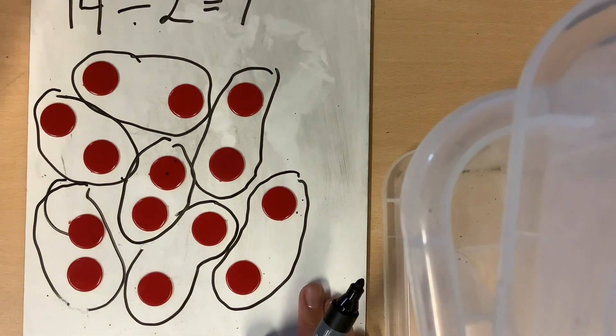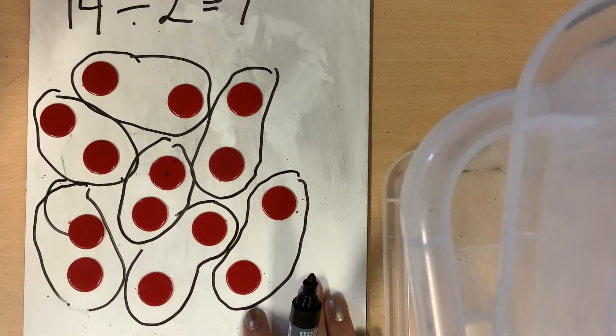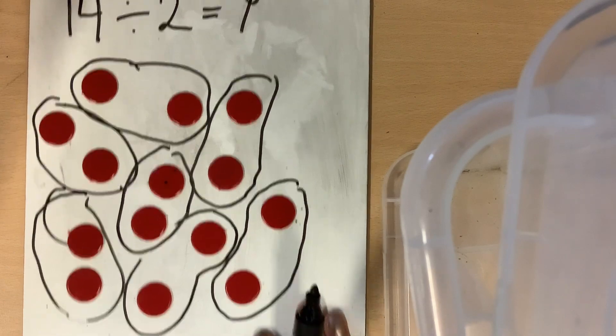What number are you going to pick? How many groups will there be when you put them into groups of two?